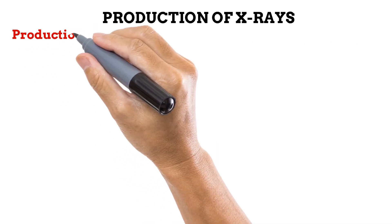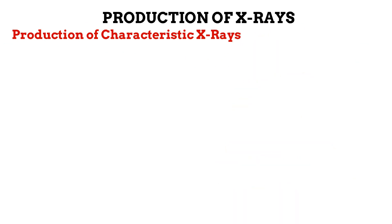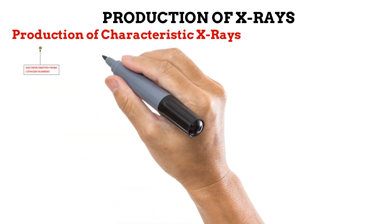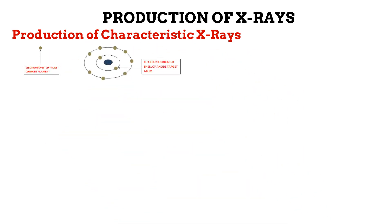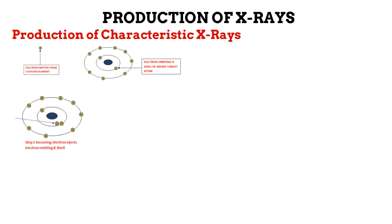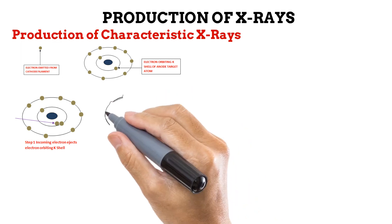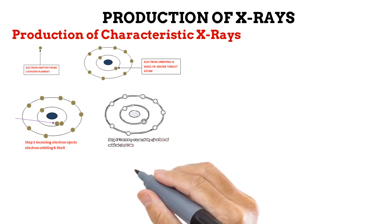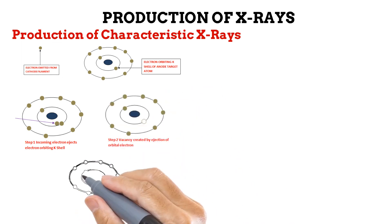That takes us to the second type of X-ray photon production: the production of characteristic X-ray photons. This time, the process occurs between the released filament electron and an electron that is orbiting the K-shell of an atom on the anode focal spot. The electron released from the cathode filament ejects an electron that is orbiting the K-shell of the anode's atom. This causes a vacancy to be created in the K-shell.